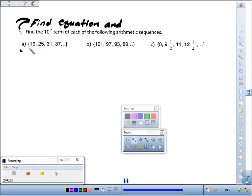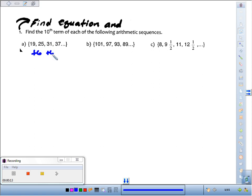Looking at 1a, we've got 19, 25, 31, 37. You can see that each time we're adding 6. So every time we think about our term numbers, 1, 2, 3, and 4, every time the term number gets bigger by 1, the term gets bigger by 6.